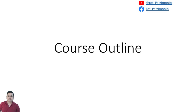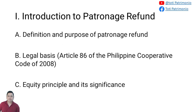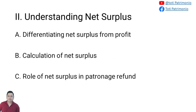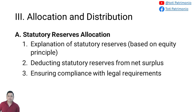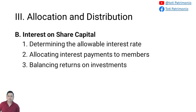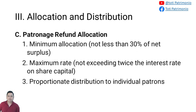For the first part of the course outline, chapter one is the introduction to the patronage refund. Chapter two is understanding the net surplus. Chapter three is the allocation and distribution, where we will discuss the statutory reserves allocation, the interest on share capital, as well as the patronage refund allocation.